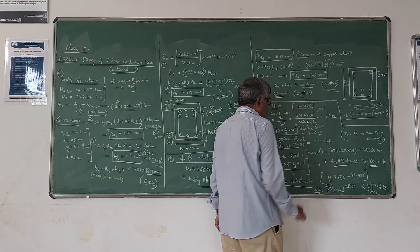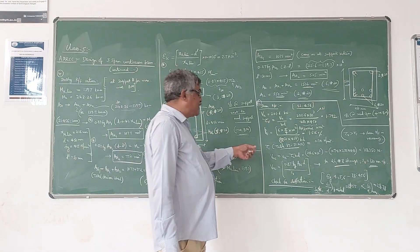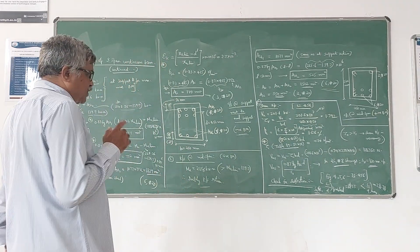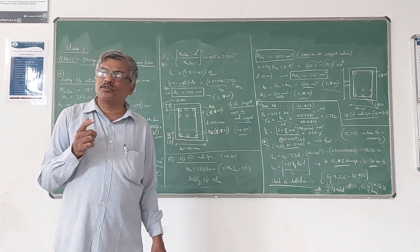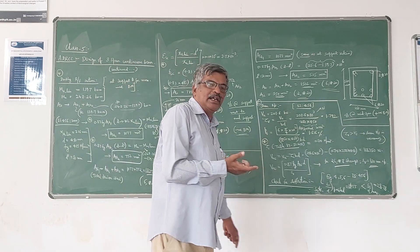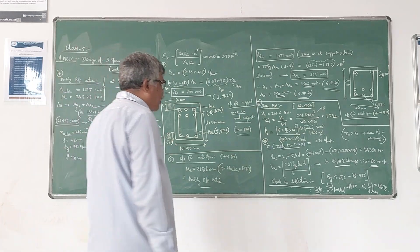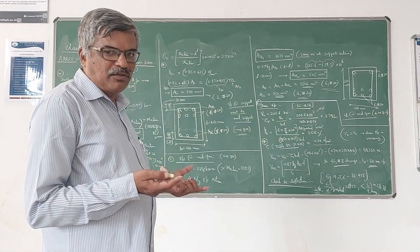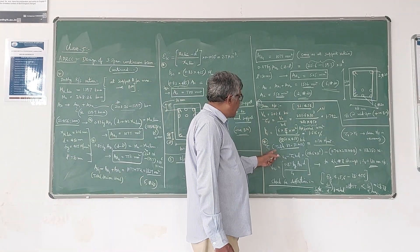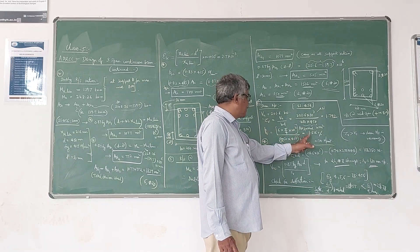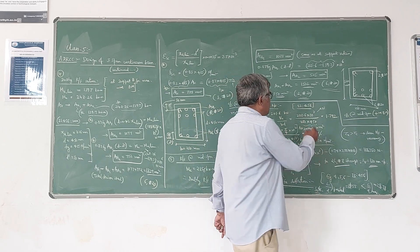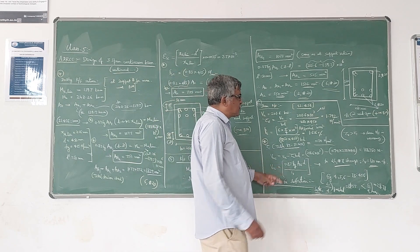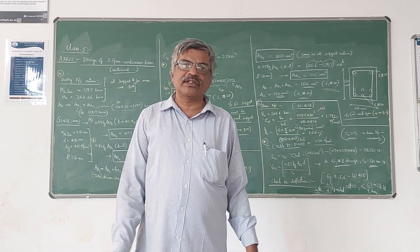Using IS 456 Table 19, which gives the shear strength of concrete TOW_C for different grades and steel percentages: for M20 concrete and PT = 1.676%, we read the TOW_C value from the table. Since TOW_V is greater than TOW_C, shear reinforcement must be designed. If TOW_V were less than or equal to TOW_C, only nominal shear reinforcement would be needed.